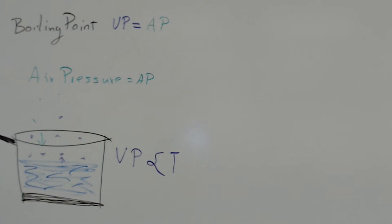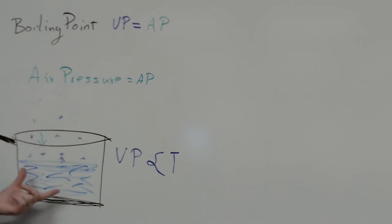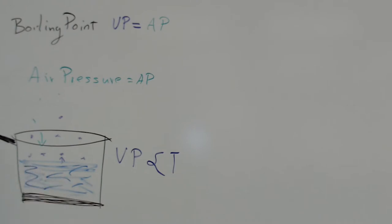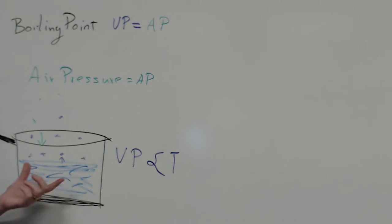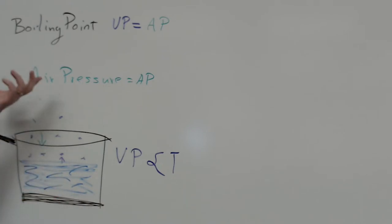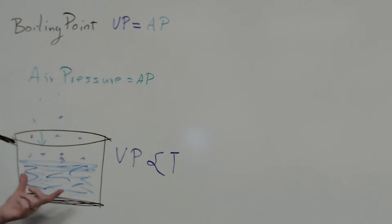This is why boiling points never stay the same in different parts of the country. For example, if you were to take a pot and boil water on top of Mount Charleston, the air pressure is so low that the water boils around 60 degrees — barely warm enough to heat up noodles. Conversely, in Las Vegas we have higher air pressure, so pure water boils around 97 or 98 degrees, because it takes more vapor pressure to equal that air pressure.